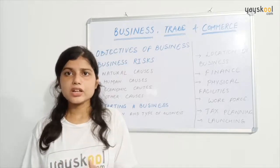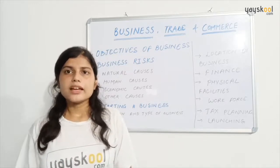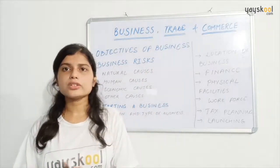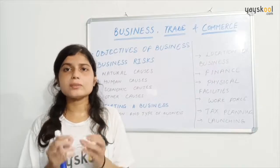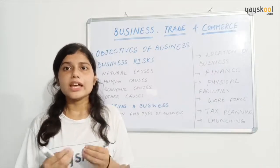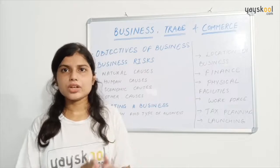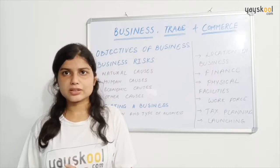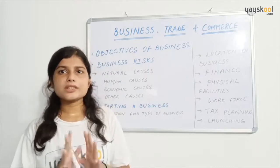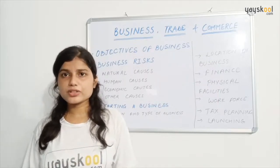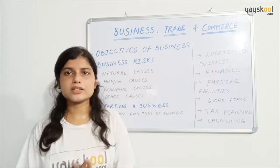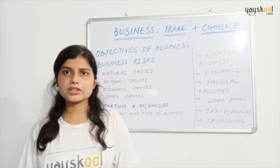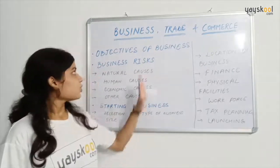Businessmen take various steps to cover these risks. The profit, which is the main income of businessmen, is at stake — it is not fixed — because business consists of various kinds of risks. Business risks are a very essential part of business, meaning businessmen are very prone to experiencing various kinds of risks.